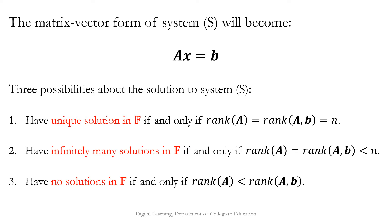There are three possibilities for the solution to system S. System S has a unique solution if and only if rank(A) = rank([A|b]) = n. System S has infinitely many solutions if and only if rank(A) = rank([A|b]) < n. System S has no solution if and only if rank(A) < rank([A|b]).